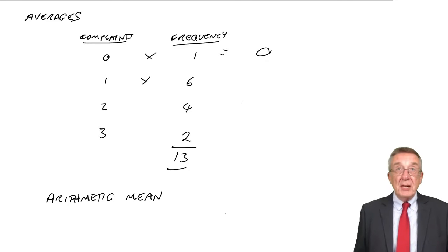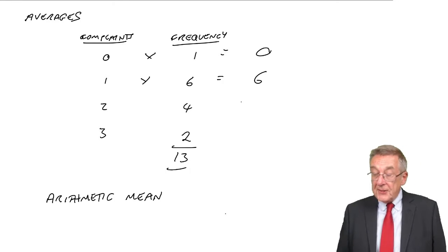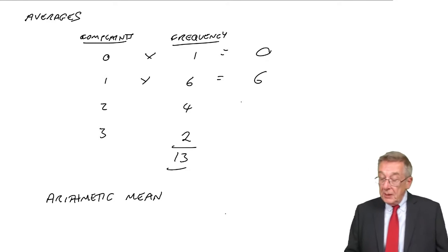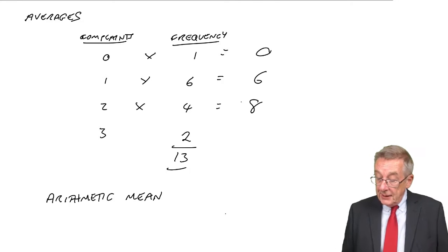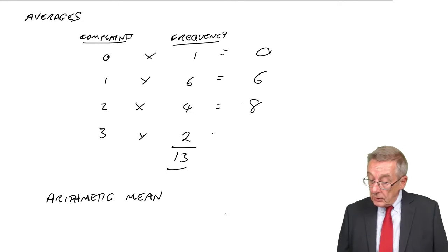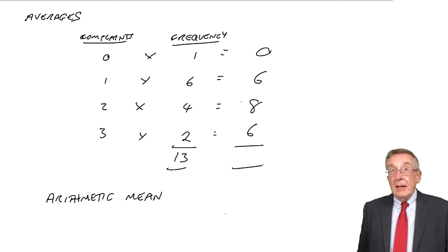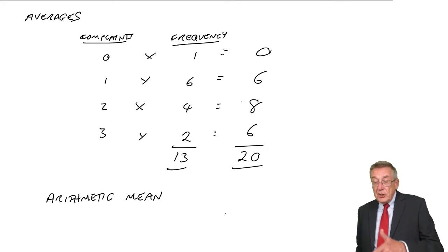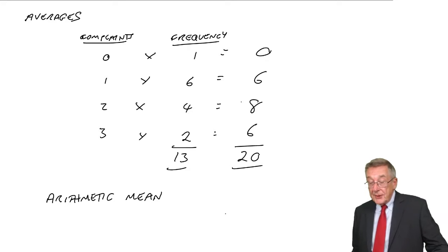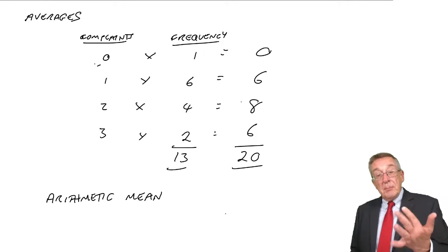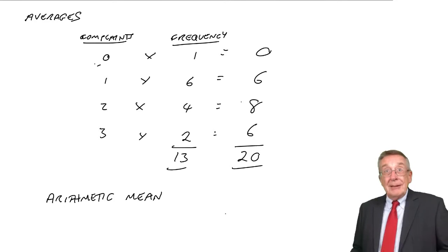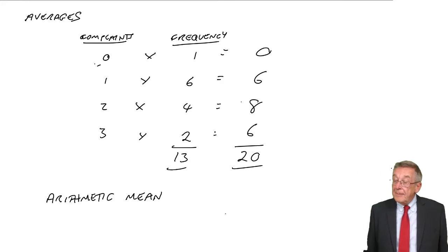There are then six 1s, so instead of going 1 plus 1 plus 1 plus 1, six 1s total 6. Now there are four 2s, so instead of going 2 plus 2 plus 2 plus 2, the total of those is 8. And 2 threes — 3 plus 3 — the total of those is 6. And if I add those up: 6, 12, 20. Surely that is the total of all the complaints. Add all those up and you get 20. Simply multiplying and adding is much more sensible.